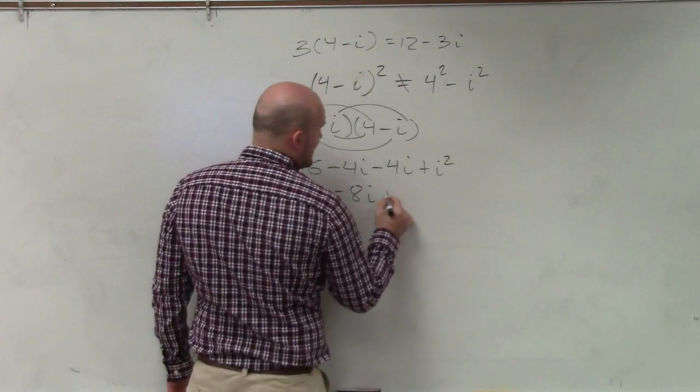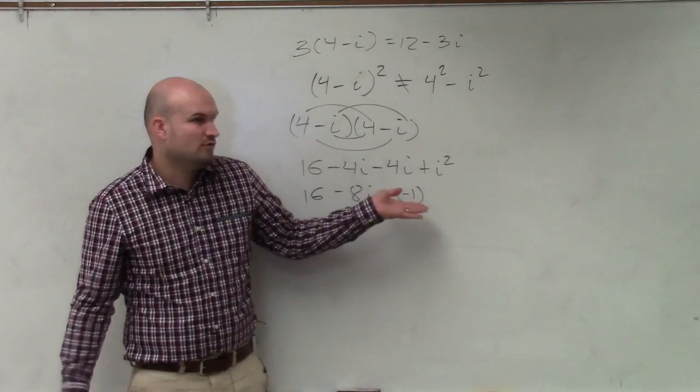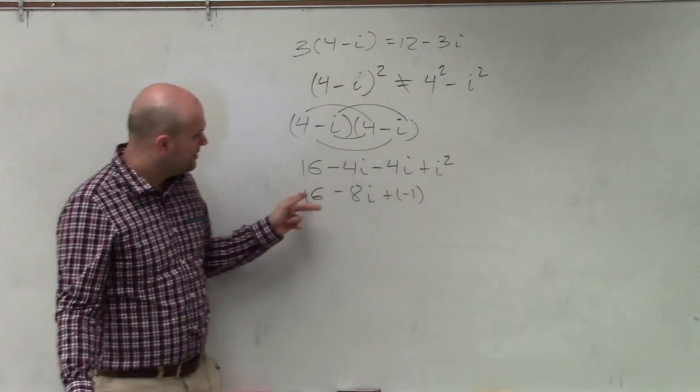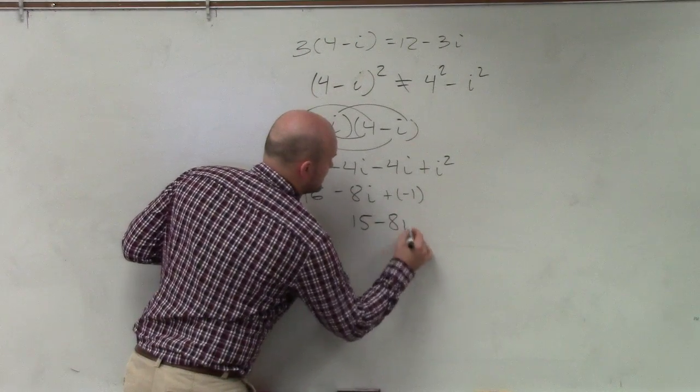And then i² we represent as negative 1, right? Well, plusing a negative 1 is the same thing as minusing 1. So 16 minus 1 is going to be 15 - 8i.